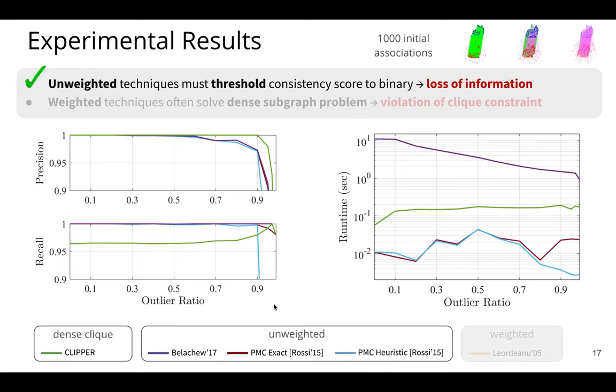So recall that the two points that we were trying to balance was this loss of information and the violation of the clique constraint. So I'm going to uncover now the unweighted algorithms here. And these algorithms in this unweighted category solve the unweighted maximum clique problem. Bellachew is essentially a binary version of CLIPPER. PMC or parallel maximum clique, both exact and heuristic, are used in the state-of-the-art teaser point cloud registration algorithm and is able to use up to 24 cores to solve maximum clique. And we see already that the weighted formulation is able to maintain higher precision for longer, while by thresholding this information, we lose some information and the performance starts degrading around 60% outlier regime.